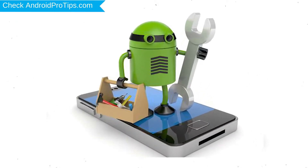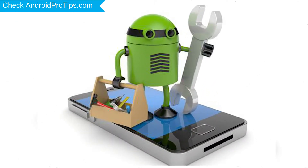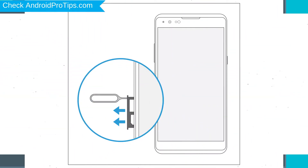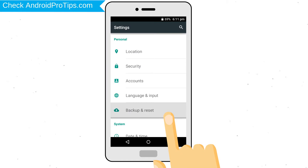Before resetting your mobile, your mobile battery must be above 50%. Remove SD cards and SIMs. Back up your Android mobile data if possible.